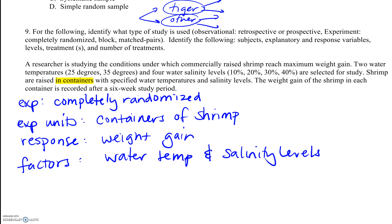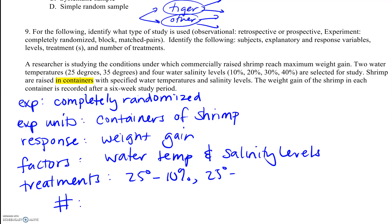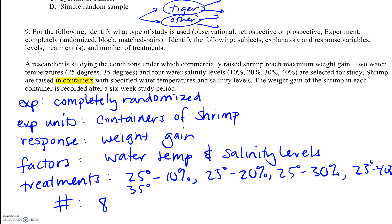The last thing is to figure out our treatments and how many there are. Water temperature at 25 degrees with 10%, 20%, or 30% salinity — and the same three salinity options at 35 degrees. We end up with a total of eight possible treatments. That's putting it into practice — that's one of the three homework problems you'll need to do.